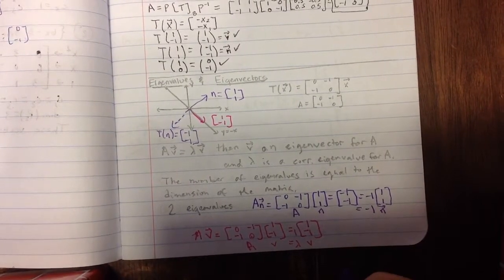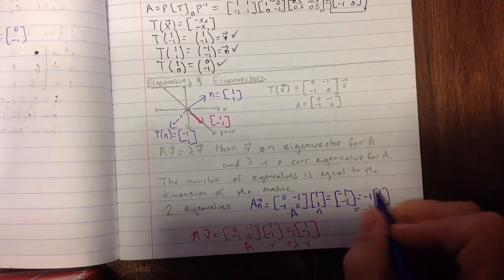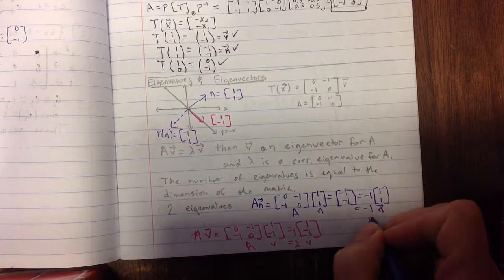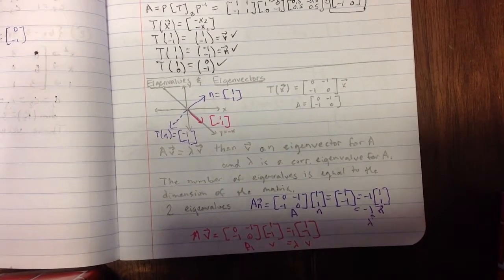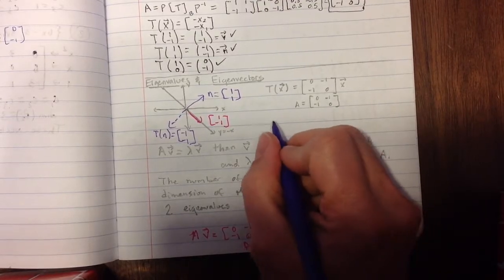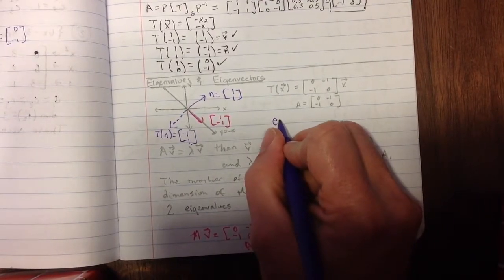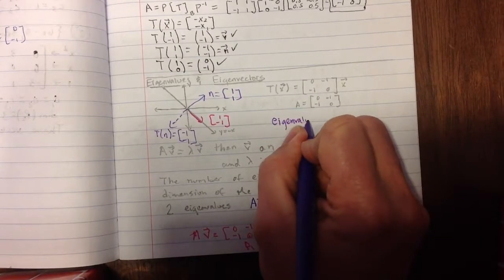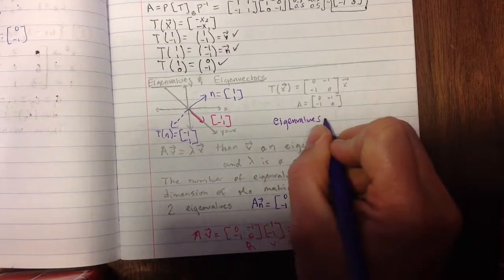So these two values here are eigenvalues. They scale them. So if we were looking for the eigenvalues and eigenvectors of this one, the eigenvalues would be...